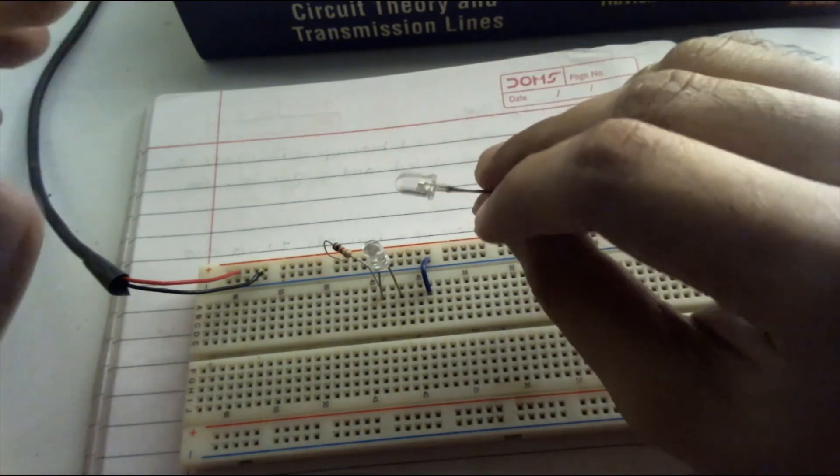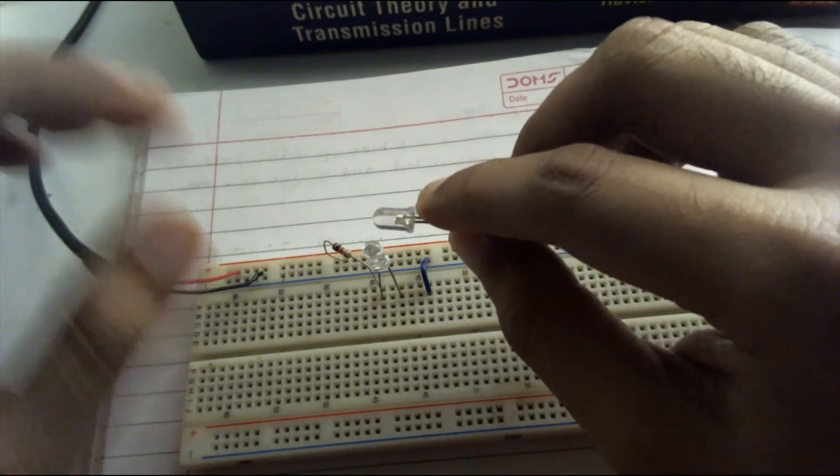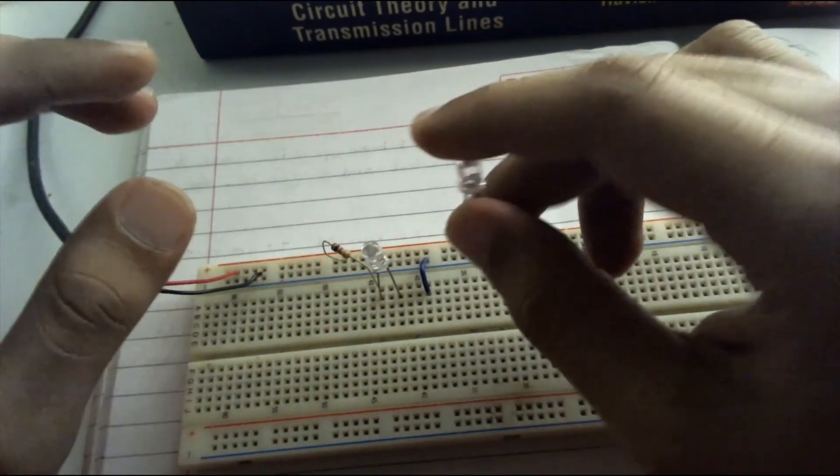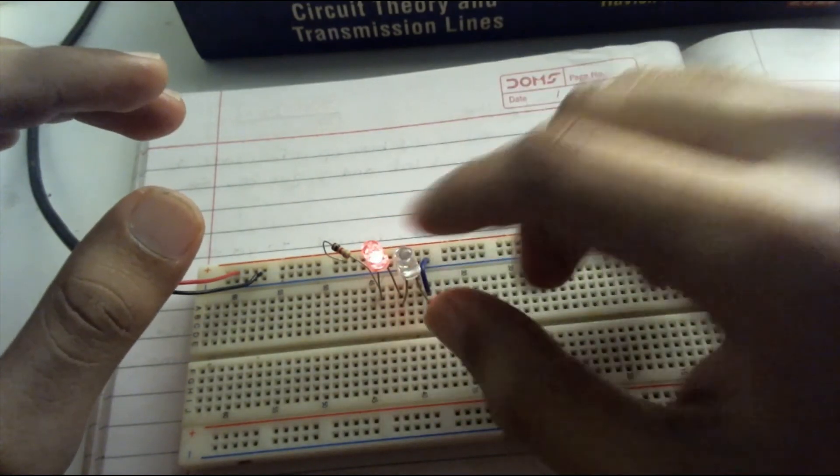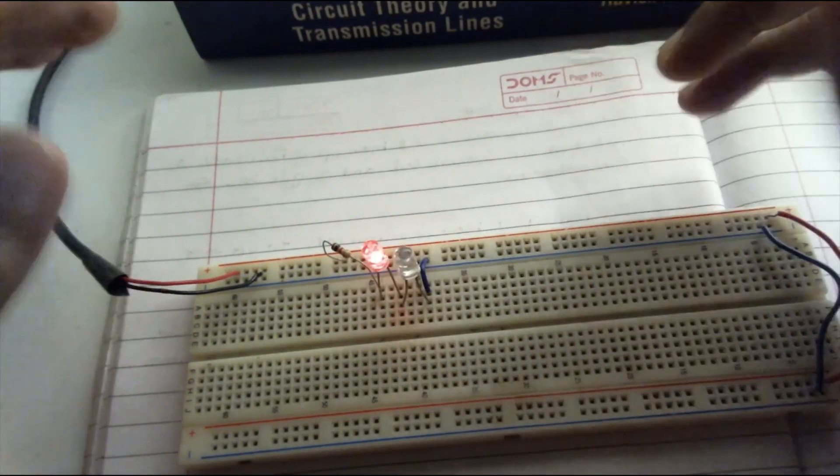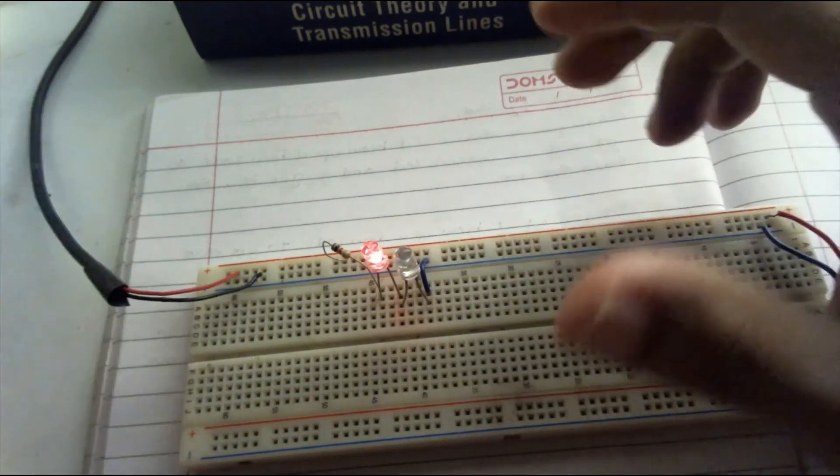If you know someone or if you are an expert in semiconductor physics, and you know how this LED is damaged and acting as a diode, please mention it in the comment. Thanks for watching.